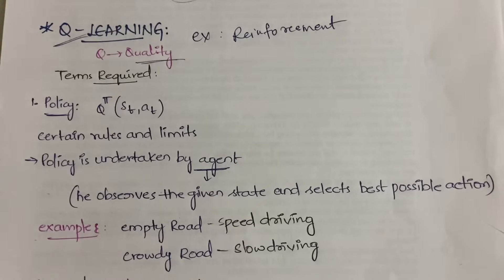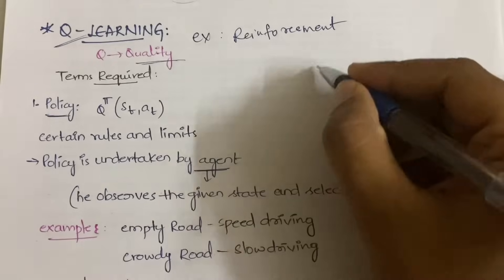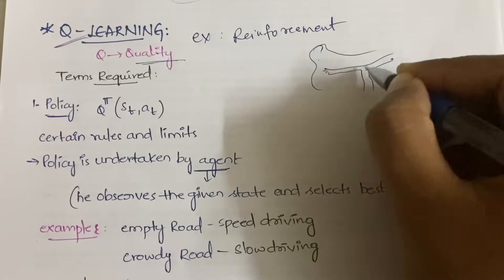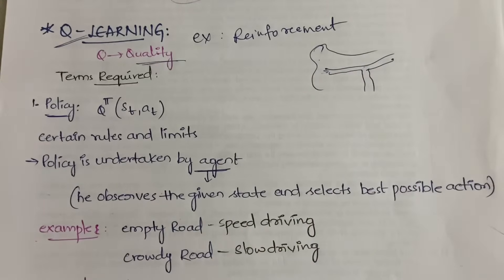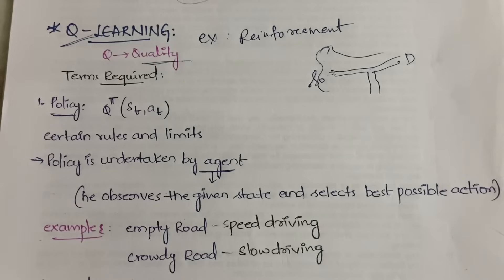Before understanding Q-learning, I'll give you a small example. You are playing a maze game where some mouse has to reach the cheese. It's like the maze you see in newspaper kids' columns — a messy maze where there's a source and a destination, and you need to reach from the source to the destination without getting stuck anywhere.